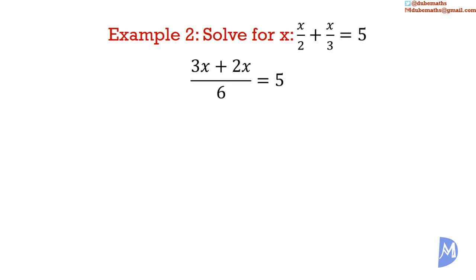3x plus 2x is equal to 5x. We multiply by 6 to remove the 6. The 6 cancel. So we remove the 5x. And 5 multiplied by 6 is equal to 30. We divide both sides by 5. Canceling. We get x is equal to. And we know that 30 divided by 5 is equal to 6. x is equal to 6.